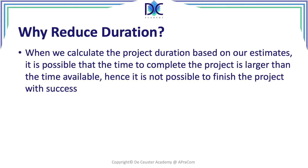Let's have a look at the reason why we want to reduce duration. When we calculate the project duration, we use our estimates — estimates of activity duration and the precedence diagram that we created. In some cases we will find that the time we need to finish the project is more than what we have, depending on the customer or organization for whom we are doing this project. When we cannot complete the project on time, we cannot say that our project is a success.